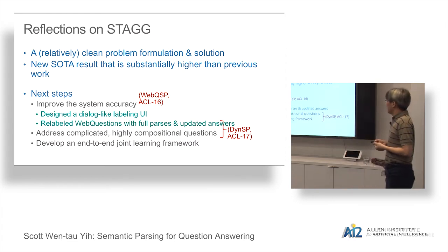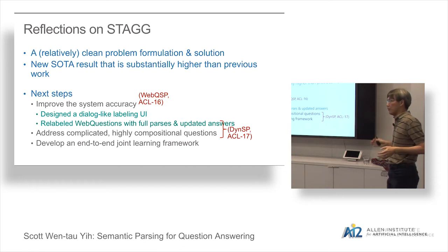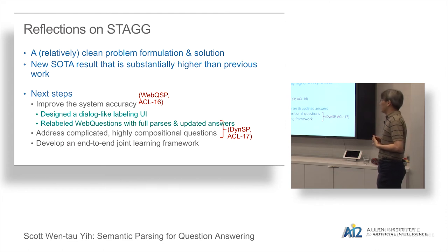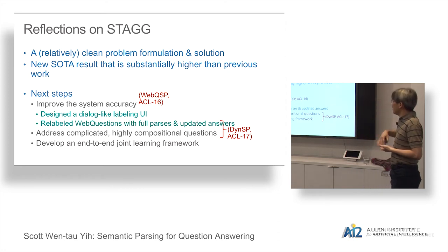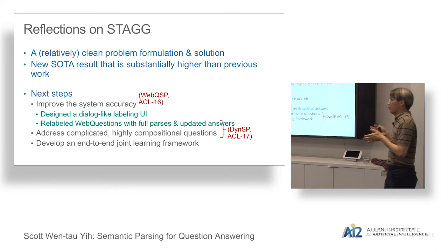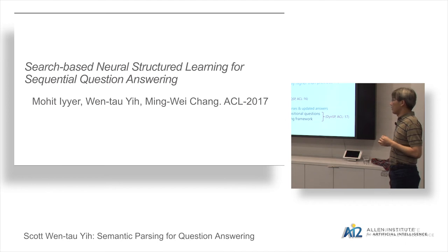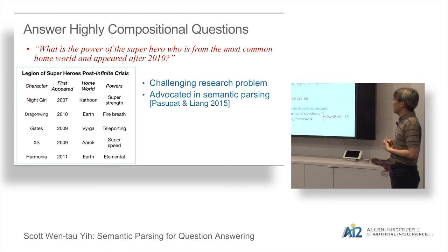Two more things we wanted to address: first, even though the original dataset claims to have compositional questions, most of them are actually simple. We want to address highly compositional questions. Second, in the STAGG project we divided the work into several stages with separate models combined at the end — probably not the most elegant approach. We really hope to have an end-to-end joint learning framework. These two motivations led us to the next project, called the Dynamic Semantic Parser.